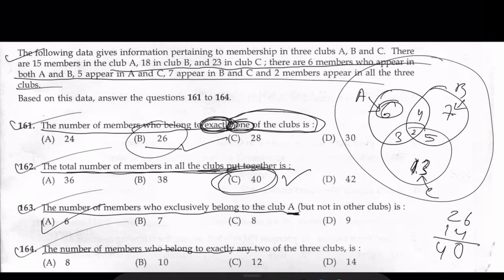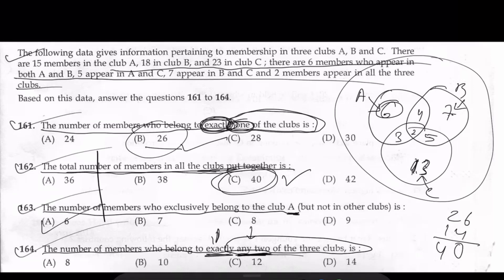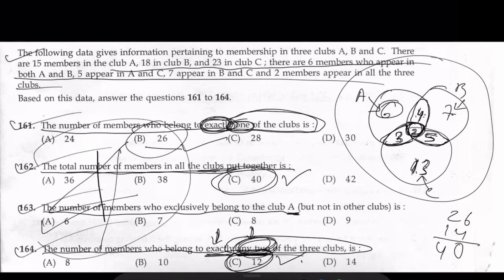Question 164: the number of members who belong to exactly any two of the three clubs. This means members in exactly two clubs — not the center (all three). So we take four (A and B only), three (A and C only), and five (B and C only). Four plus three plus five equals twelve. So the answer is 12. That gives you four marks. If you have any doubts or confusion, please comment below and we'll be able to clarify. Thank you for watching.